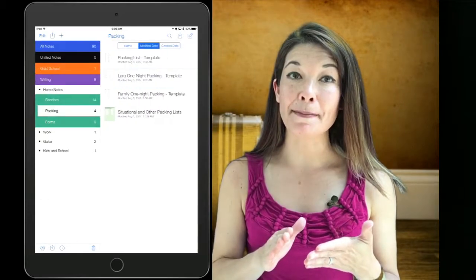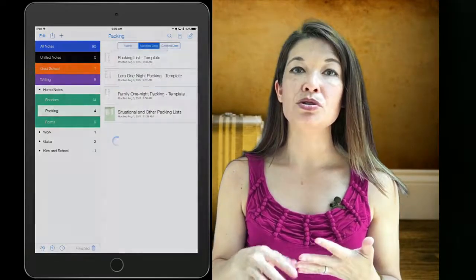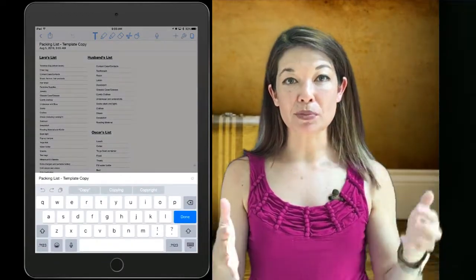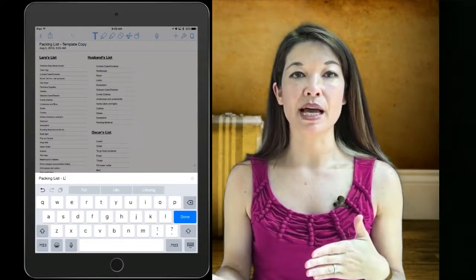Now whenever I have a trip coming up, I duplicate this template by pressing down on the title, choosing to duplicate, and then renaming the new list. So in this case we have a beach trip coming up to Lewis Beach. I'll delete template copy and then replace that with Lewis Beach.